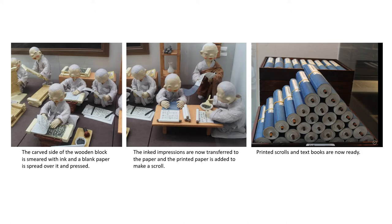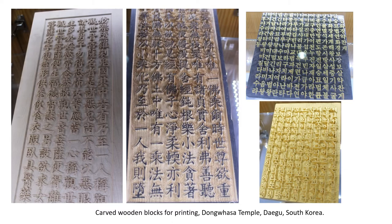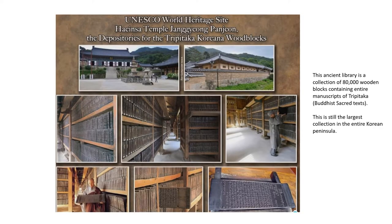Some of the wooden script blocks are shown here in this picture. The first two on the left are in Chinese language whereas the right two are in Korean language. This is one of the famous UNESCO World Heritage sites in Daegu, South Korea, where a collection of 80,000 blocks containing the entire Tripitaka literature of sacred Buddhist teaching are preserved in Haeinsa temple — still the largest and unbroken collection in the entire Korean Peninsula.